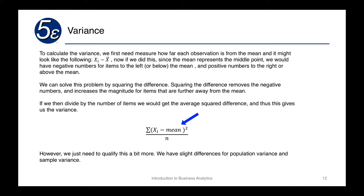We fix this problem by squaring the difference, which removes the negative numbers and also increases the magnitude for items that are further away. For example, a point 10 units from the mean becomes 100 when squared, whereas a point 1 unit away becomes just 1. So the formula takes each observation x_i, subtracts the mean, squares it, adds them all together, and divides by n — giving us the average squared difference of every point.